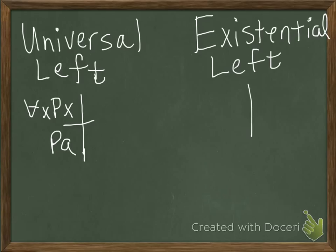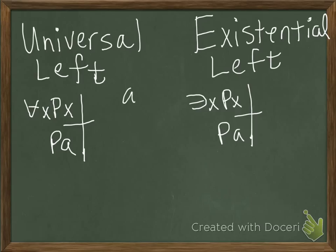Likewise, if we have the formula there exists an x, px, on the left side, then we can also instantiate that as pa. So for both of these, we can use any of the letters a through v, just like in proofs.